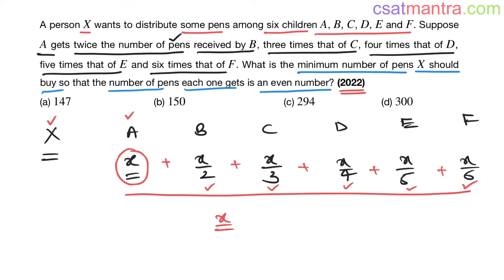X should be minimum, least and should be common multiple because X should be divisible by 2, 3, 4, 5 and 6, right? So X is LCM of 2, 3, 4, 5, 6.